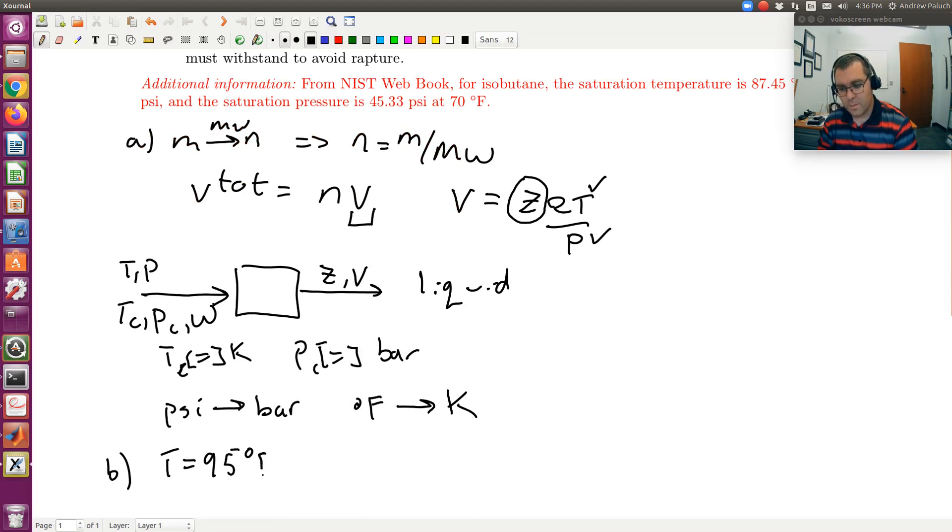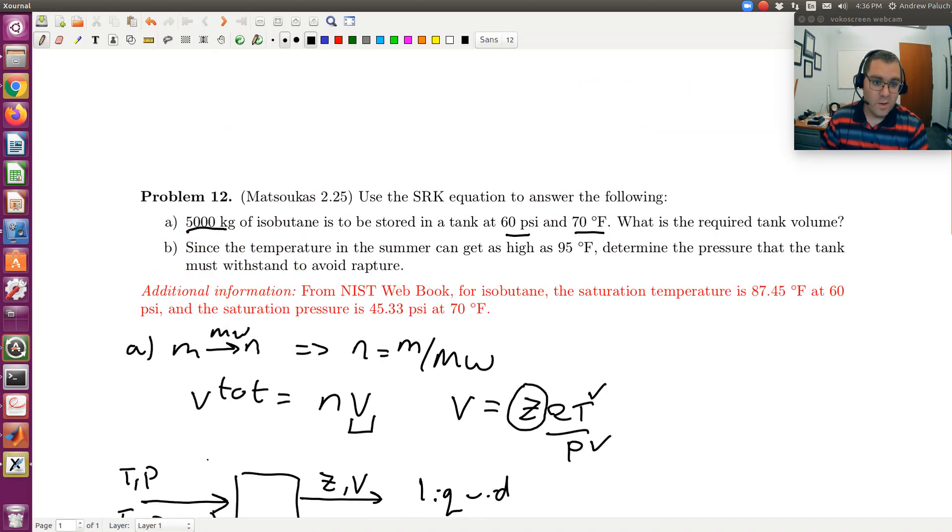So the way I view it is we're given temperature. Temperature is this 95 degrees Fahrenheit. And we know V, right? So from the last problem, we just calculated V. We calculated the total volume and hence the molar volume. But if this is a closed tank, even if I increase the temperature,